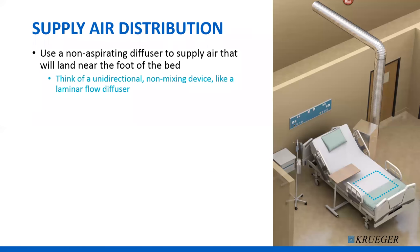Regarding supply air distribution, ASHRAE 170 recommends supplying two air changes per hour of fresh outdoor air. We recommend using a non-aspirating laminar diffuser to supply that air, placing the diffuser around the foot area of the bed. An appropriate device for this would be the 5000 or 5100 series laminar flow diffusers.